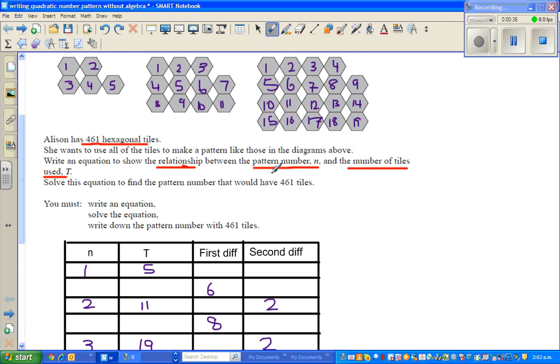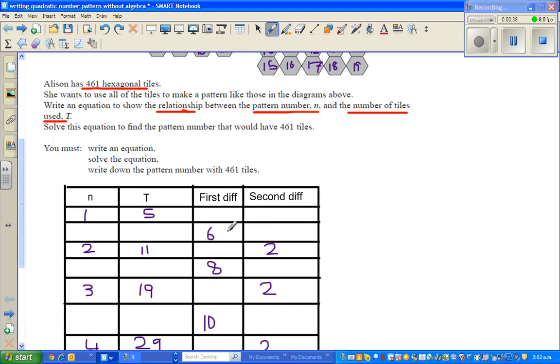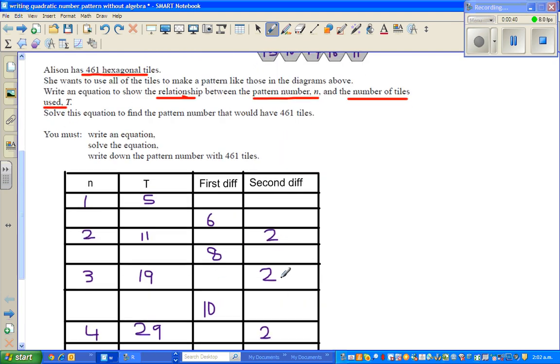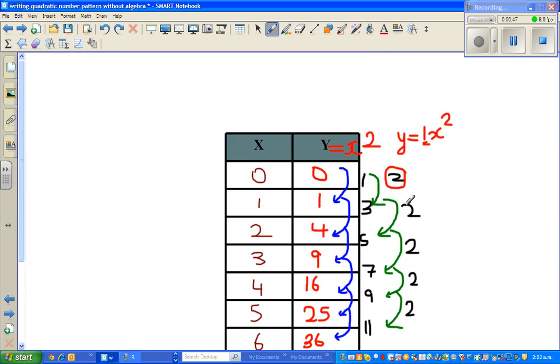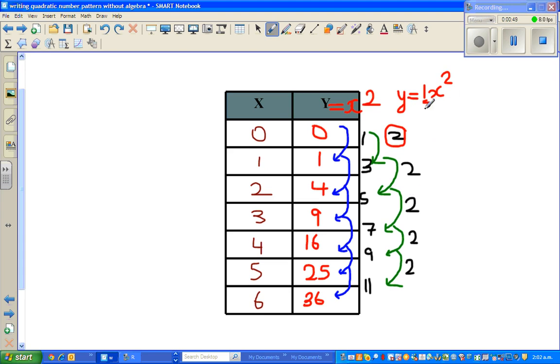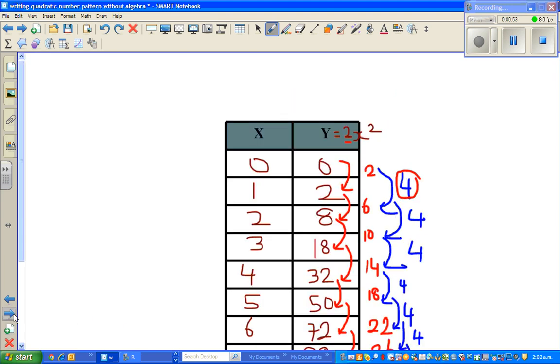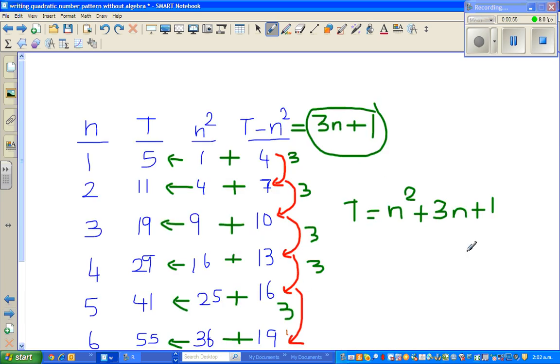We could figure out this is a quadratic pattern because the first difference is not constant. The second difference is constant. So we say this is a quadratic pattern. So this is where we stopped.